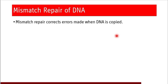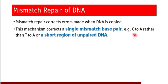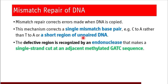Mismatch repair corrects errors made when DNA is copied during the replication process. This mechanism corrects a single mismatch base pair — for example, a mismatch pair of C to A rather than thymine to adenine. It is abbreviated as MMR, and it can also correct a short region of unpaired DNA. The defective region is recognized by an endonuclease enzyme that makes a single-strand cut at an adjacent methylated GATC sequence.